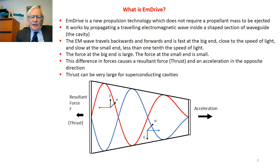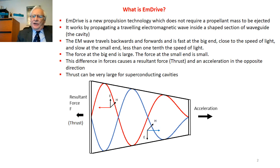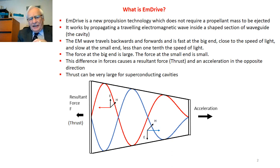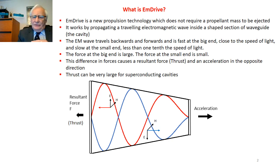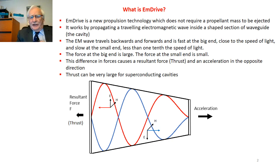So what is M-Drive? It's a new propulsion technology which does not require a propellant mass to be ejected out of the back. And it works by propagating a travelling electromagnetic wave inside a shaped section of waveguide, which we call the cavity. An electromagnetic wave comprises electric and magnetic fields at 90 degrees to each other, as shown by the E and H fields in the diagrams. The M wave travels backwards and forwards and is fast at the big end, which is close to the speed of light, and slow at the small end, which is usually less than one tenth the speed of light. The reflections mean that the force at the big end is therefore large and the force at the small end is small. And it's this difference in forces which causes a resultant force which we call thrust and an acceleration in the opposite direction. Now thrust can be very large for some superconducting cavities.